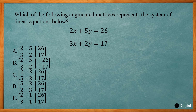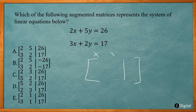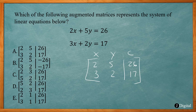This problem asks which augmented matrix represents a system of linear equations. All we need to do is put the X values in the first column, the Y values in the second column, and the constants in the third. So 2, 5, 26 and 3, 2, 17 — just put it in order. The answer is A.